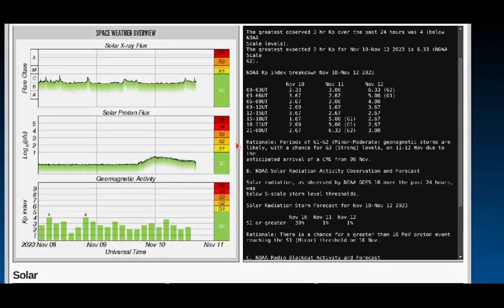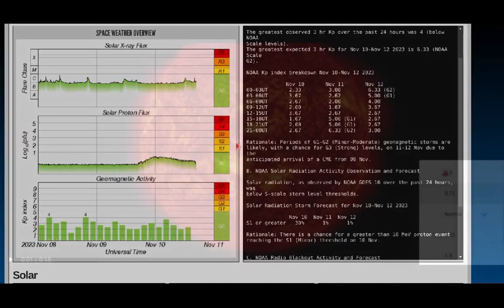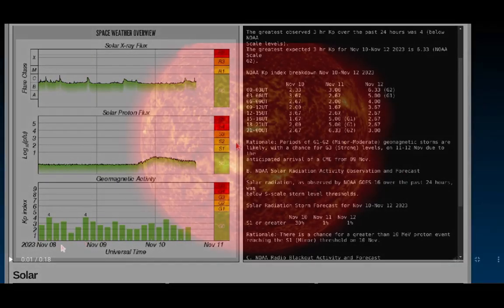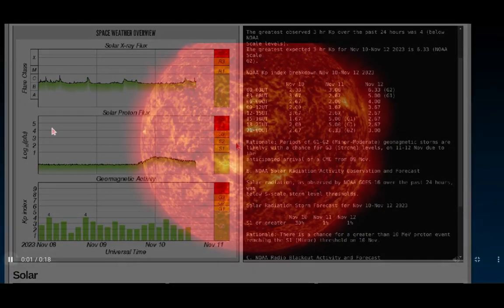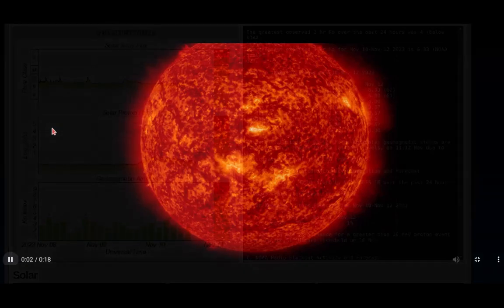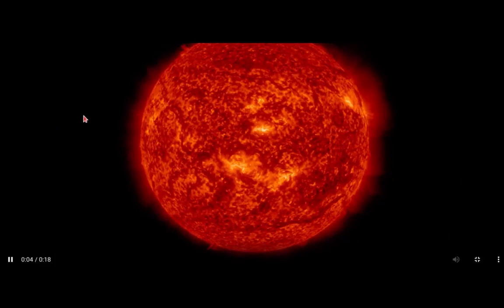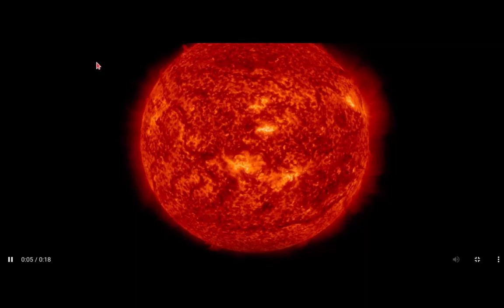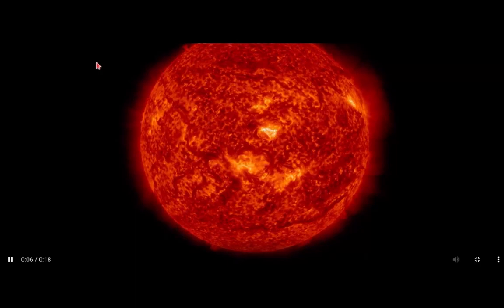The initial impact going up to a KP5 with at least a G1 minor magnetic storm is going to be 1500 to 1800 UTC tomorrow, November 11th. That's going to be right around 11 p.m. to midnight, early morning between the 11th and 12th in my time zone, Pacific Standard Time.